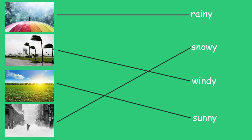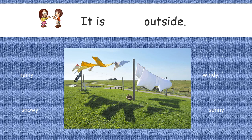Good job reading all the words with me today. Next we're going to practice reading sentences about the weather, and then we will write about them. The first sentence says 'It is...' — what type of weather do you think it is outside in that picture? It is windy outside. Read that with me please. It is windy outside. Now try to read it by yourself. You did it — it is windy outside.